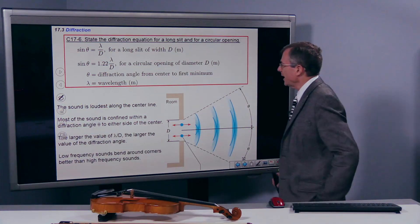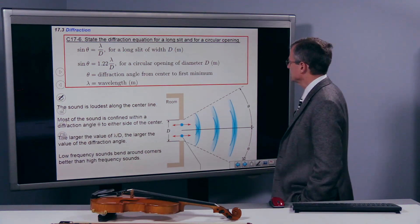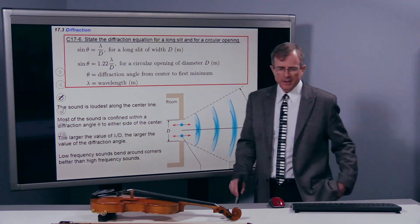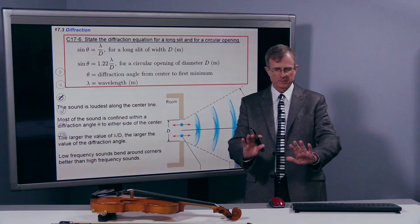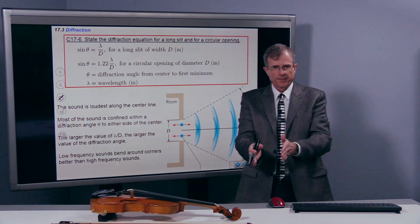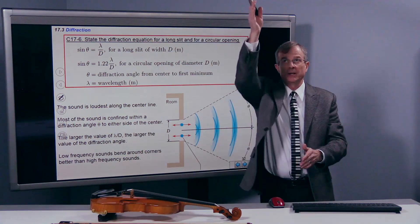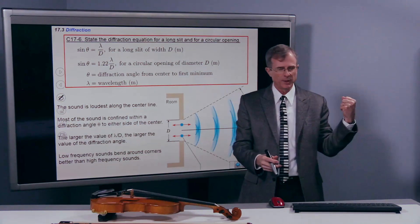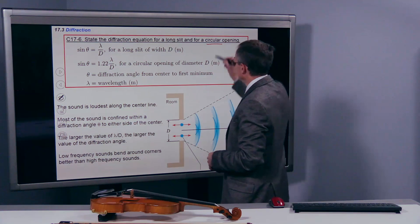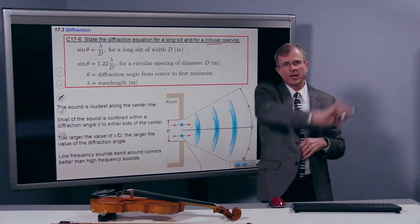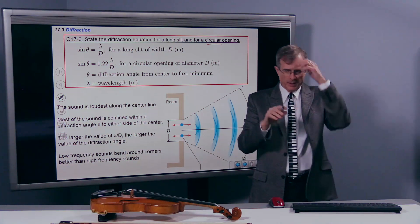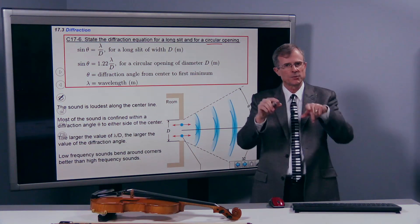Let's state the diffraction equation for a long slit and for a circular opening. By long slit, I just mean have a wall here and a wall here and a long slit opening. A circular opening is just a big flat wall and I take my bandsaw and cut a circular hole in it. And then we're trying to think about how sound propagates through that hole.